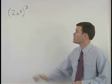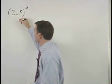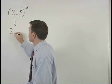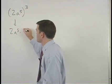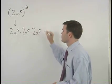In this problem, 2a to the fifth to the third can be thought of as 2a to the fifth times 2a to the fifth times 2a to the fifth.